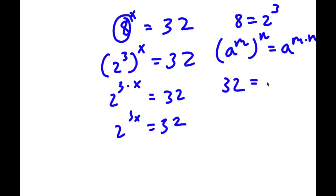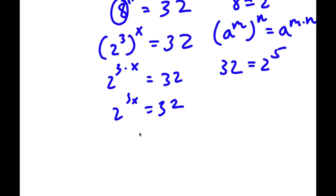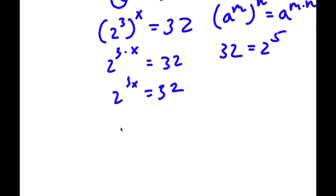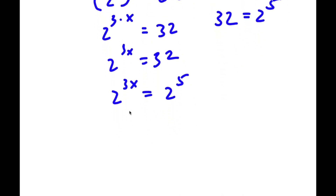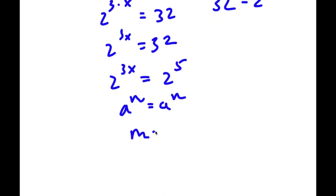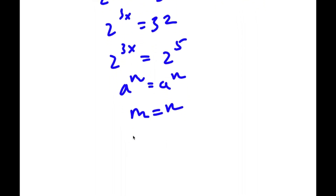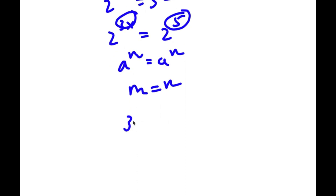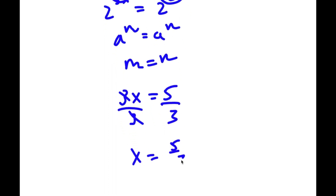Now 32 is the same thing as 2 to the power of 5. So I can replace 32 with 2 to the power of 5, giving me 2 to the power of 3x equals 2 to the power of 5. Since the bases are the same, the exponents must be equal, so 3x equals 5. Dividing both sides by 3, I get x equals 5 over 3.